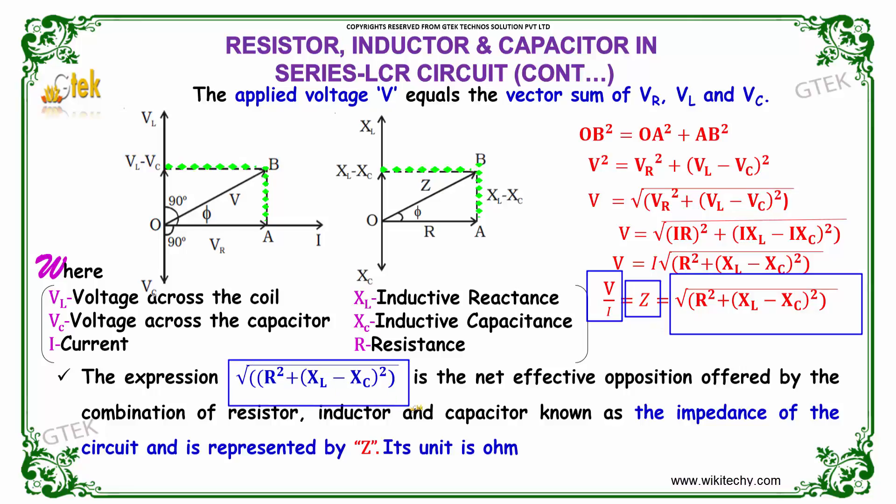The expression is considered as the net effective opposition offered by the combination of resistor, inductor and capacitor. This is referred to as impedance of the circuit, represented by Z, and the unit is ohm.